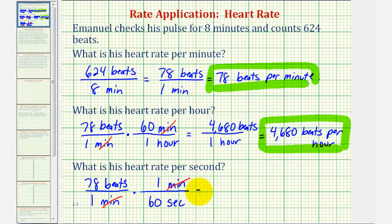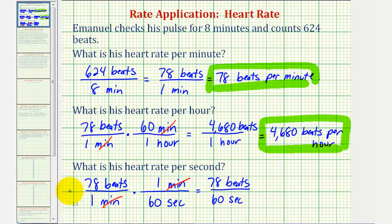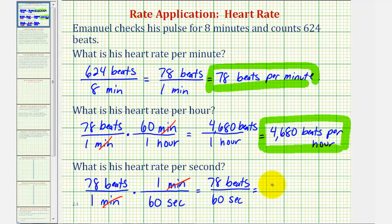But notice how here, we would have a quotient of 78 beats per 60 seconds. Let's go ahead and find this quotient on the calculator. 78 divided by 60, and we have 1.3, which means the unit rate would be 1.3 beats per second, or beats per one second, which again we can write as 1.3 beats per second.